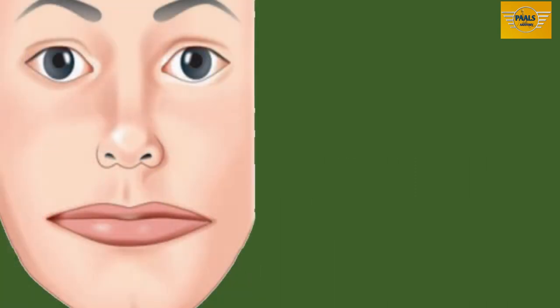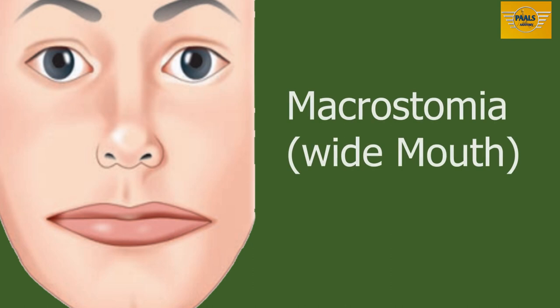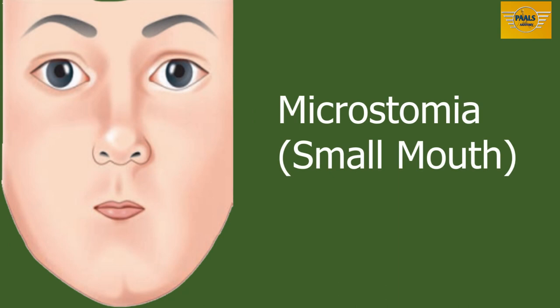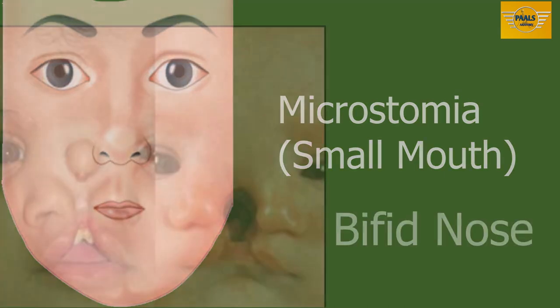Sometimes the fusion of the maxillary and mandibular processes can occur but not be adequate, resulting in macrostomia — a wide mouth. Other times, fusion may be excessive, resulting in microstomia, which is a small mouth.